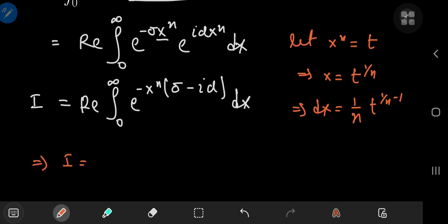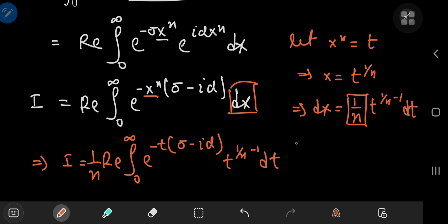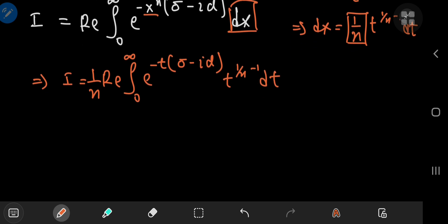So this implies that i equals the real part of... You have this factor of 1 by n, the real part of the integral from 0 to infinity of e to the negative t variable times sigma minus i times alpha. And the differential element transforms into... I forgot the dt term here, and I factored out the 1 by n anyway. So we have t to the 1 by n minus 1 dt. Now let's take a moment to actually analyze what we've gotten so far.